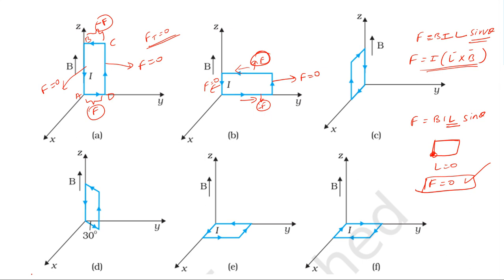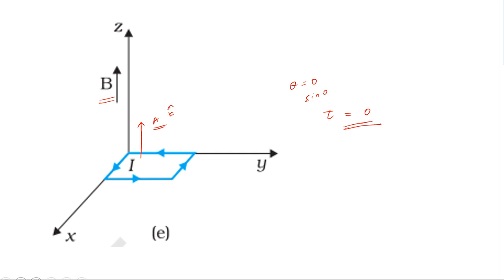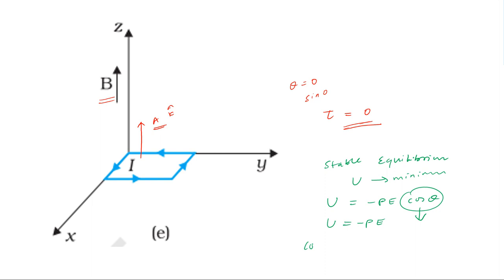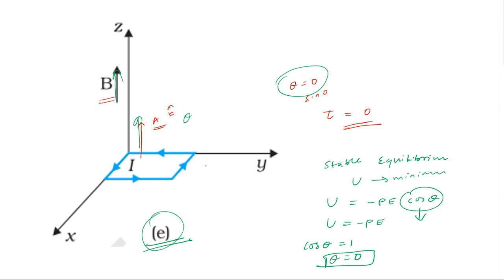For stable equilibrium: the potential energy U = -pB cos θ must be minimum. U is minimum when cos θ = 1, i.e., θ = 0°, meaning the area vector is parallel to the magnetic field (same direction). In the diagram where the area vector and magnetic field are in the same direction with angle between them equal to zero, that corresponds to stable equilibrium.